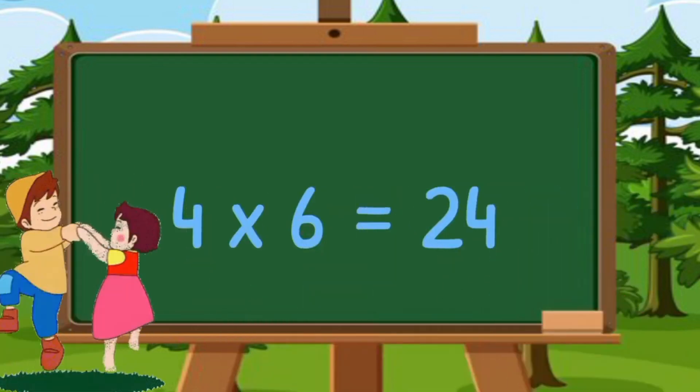Table of 14. 14 1's are 14. 14 2's are 28. 14 3's are 42. 14 4's are 56. 14 5's are 70.